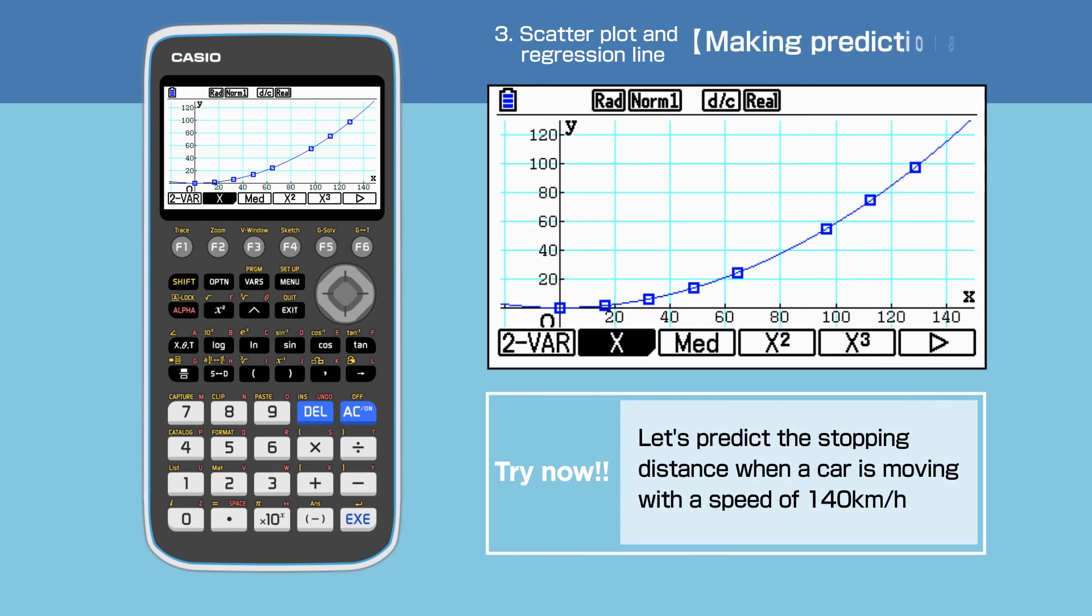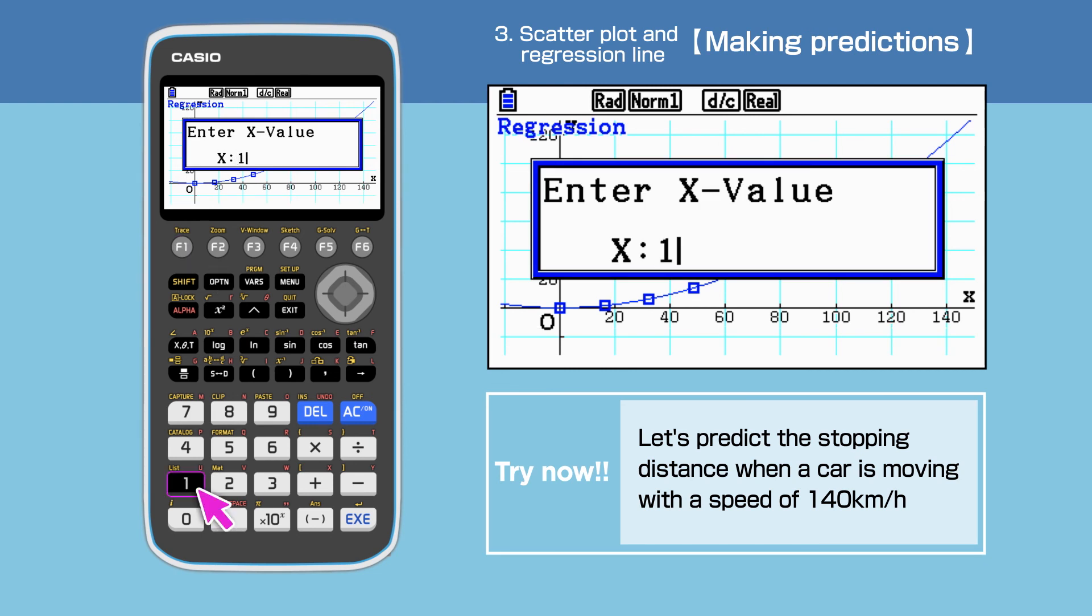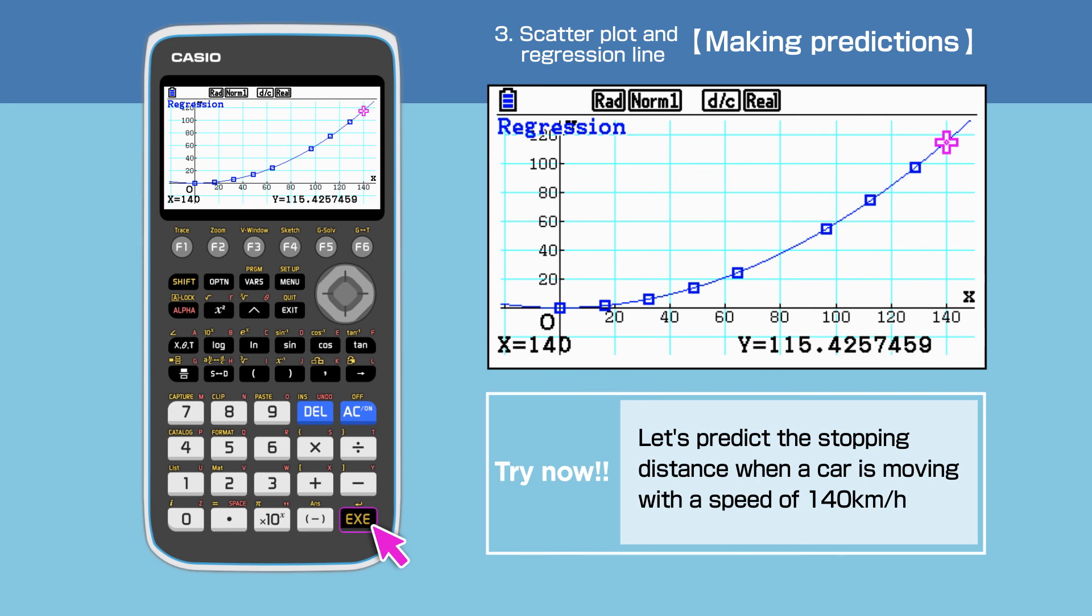Lastly, using this graph, we will predict the stopping distance for a given speed. Press SHIFT to access the command menu, then select F5, GSO. Press F1 to choose Y calc and enter 140. Press EXECUTE.